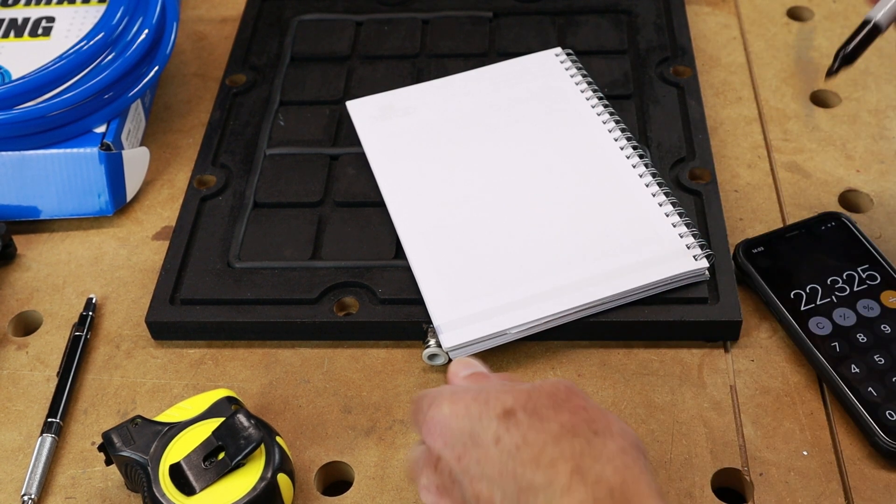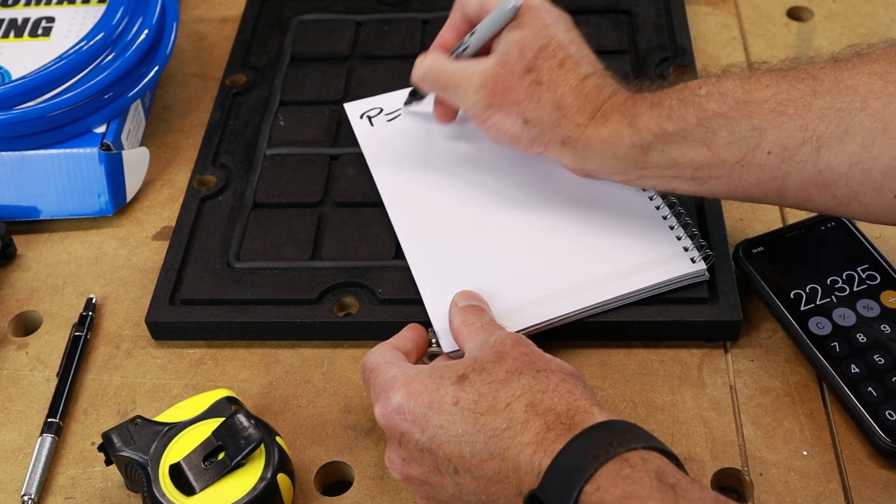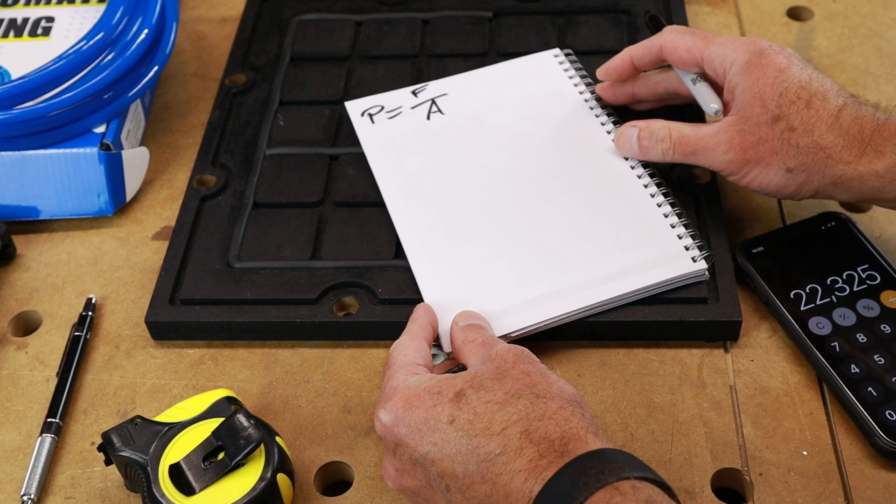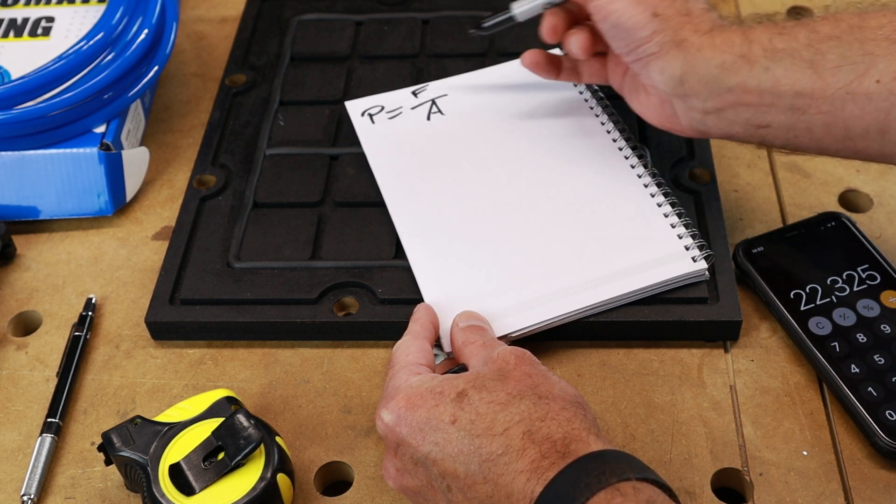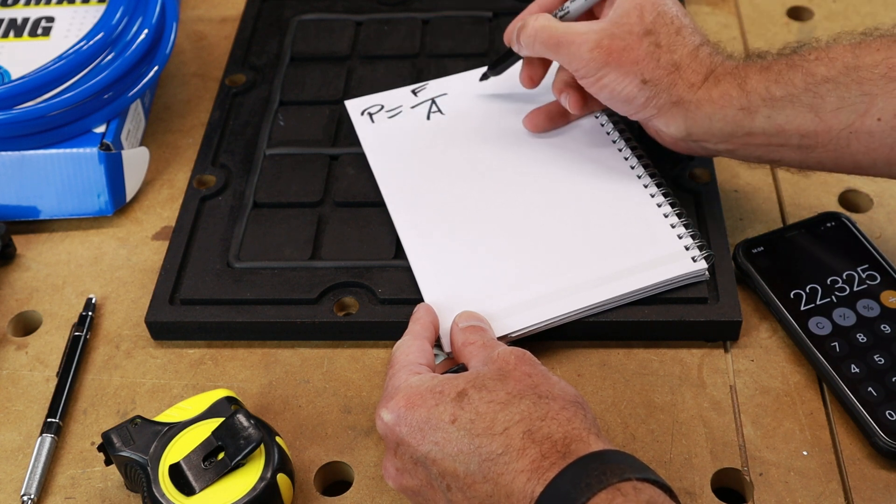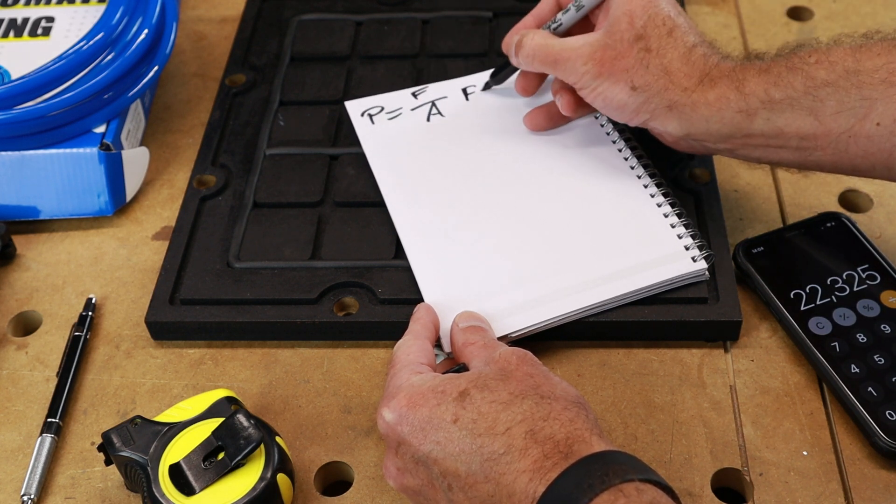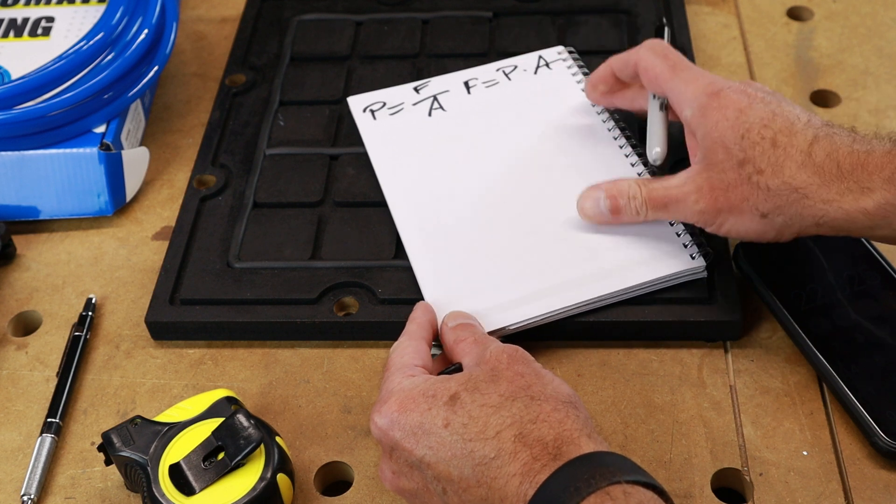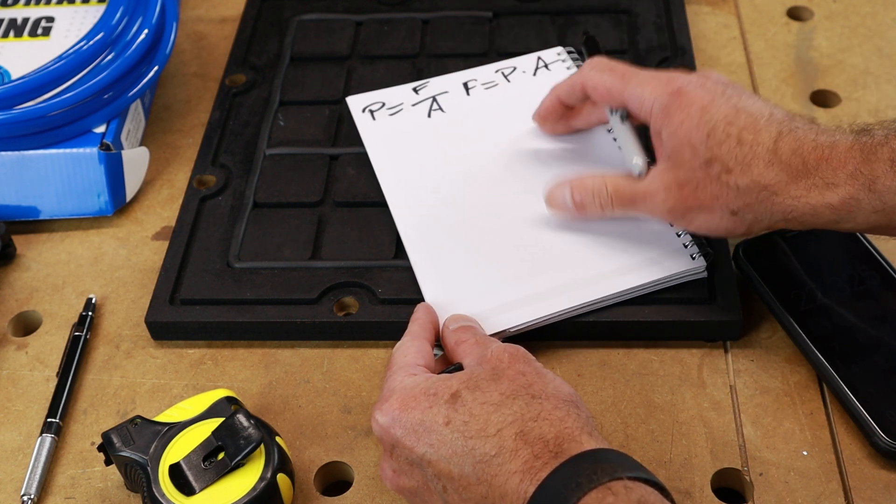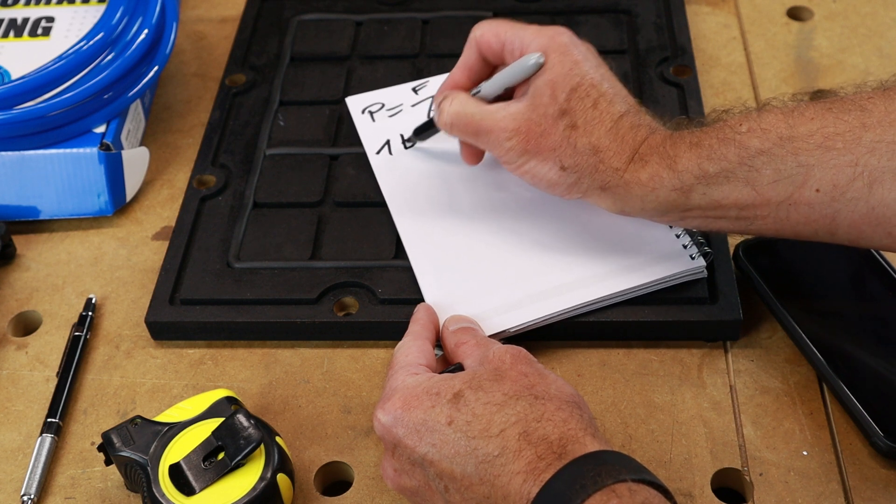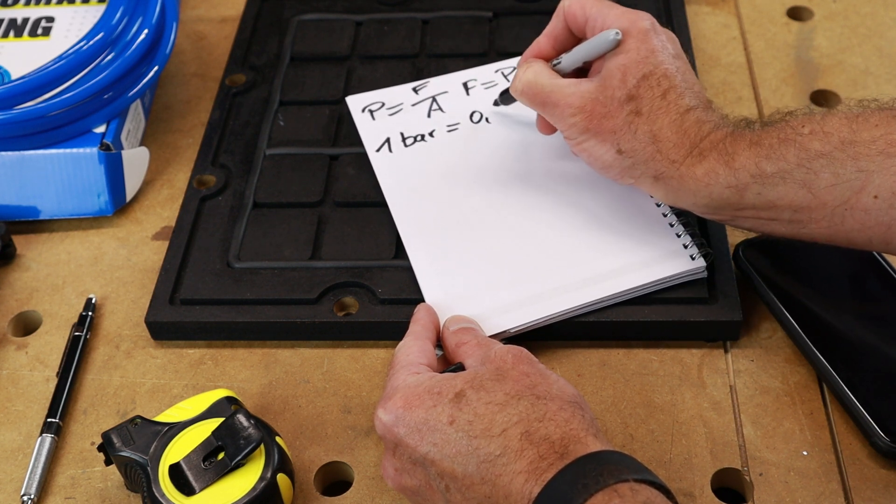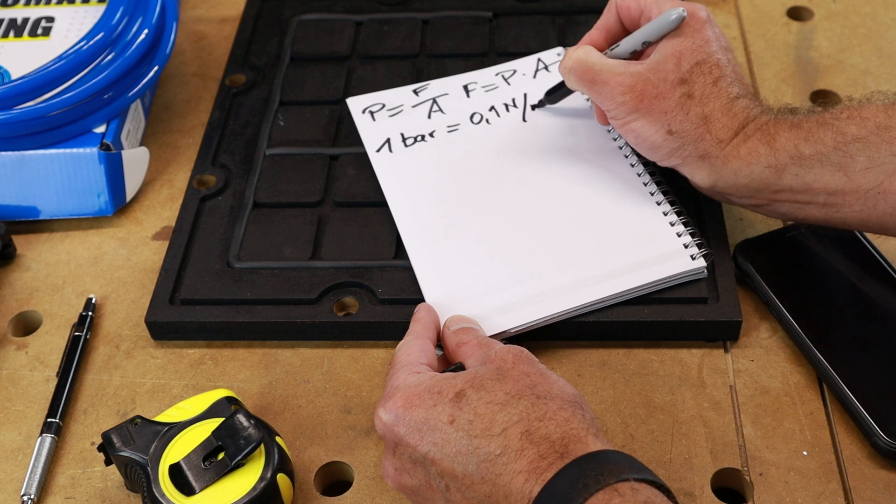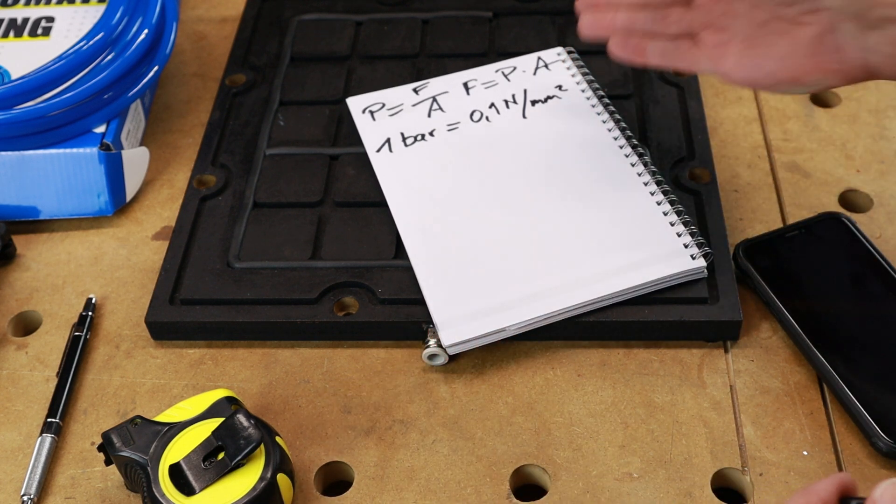So this is super easy to calculate. There are two things we need to know. Pressure equals force divided by area, newton per square millimeter. So if we need the force, we bring A over to the other side: F equals p pressure times the area. The other element here, my gauge shows bar, and we can show that one bar equals 0.1 newton per millimeter square.